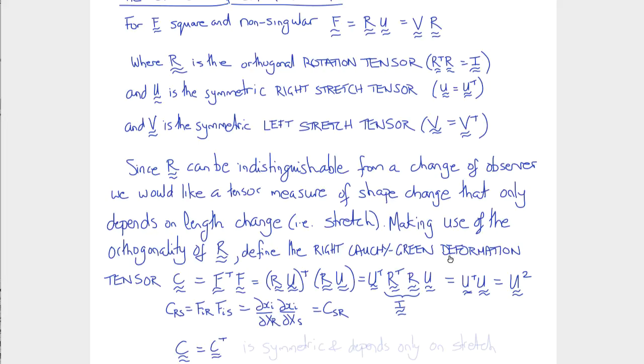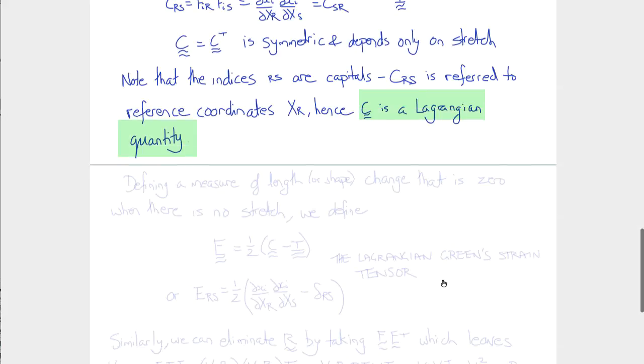And furthermore, notice that the indices of C are the capital letters, referring to the components of the reference or undeformed coordinates. So C, the right Cauchy-Green deformation tensor, is a Lagrangian quantity.